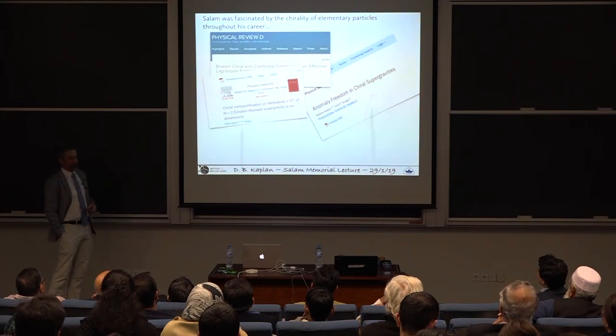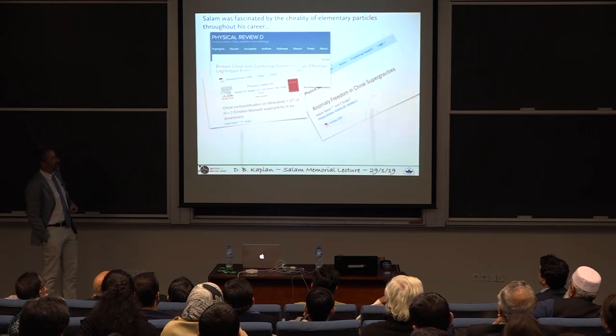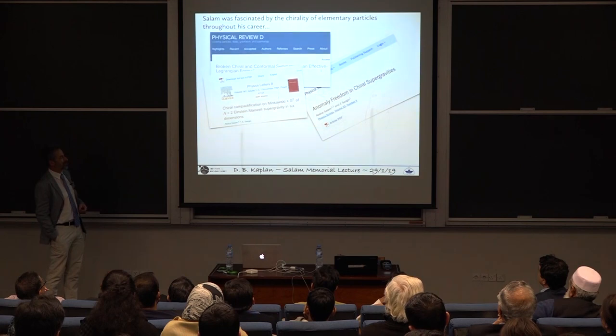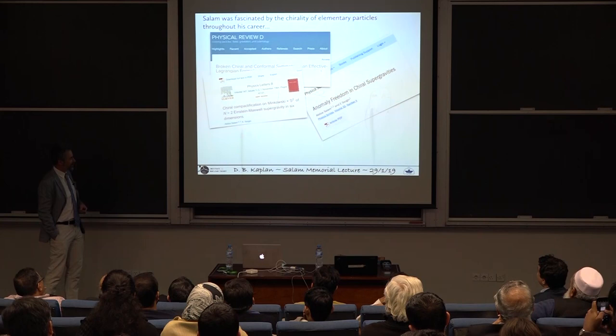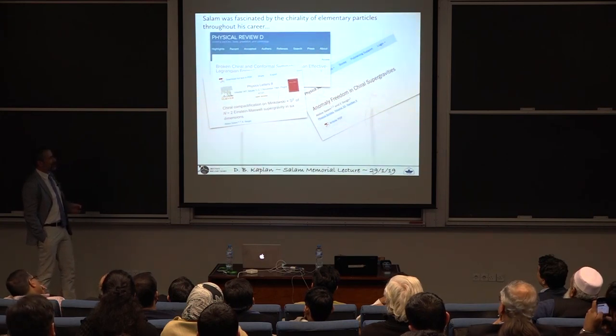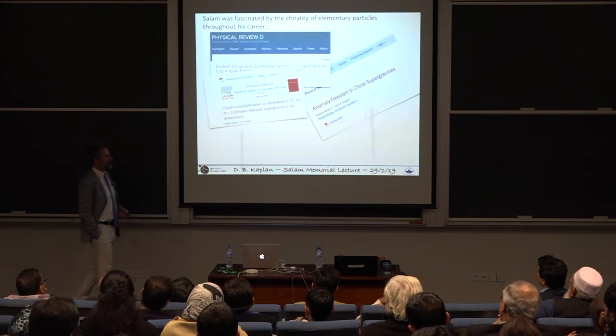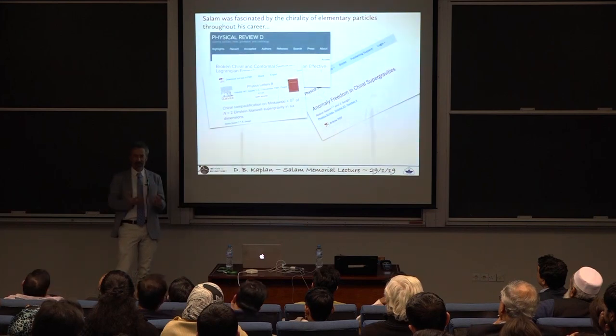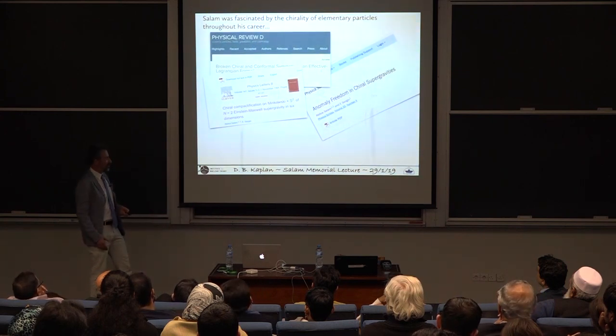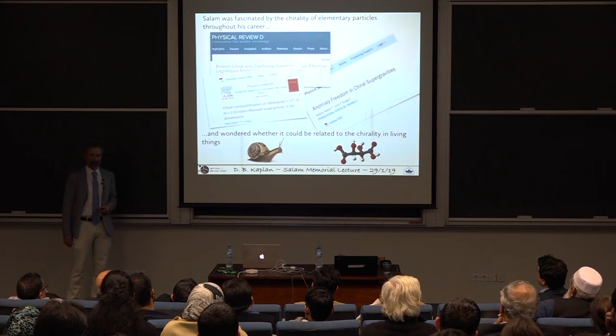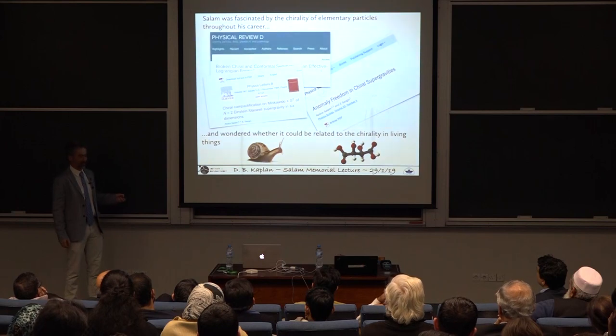Now, Salam wrote lots of papers on chirality. I just pulled off a few from this list. They're very technical. Chiral compactification on Minkowski cross the two-sphere of N equals two Einstein Maxwell supergravity in six dimensions. This is a hard paper to read, but he loved chirality. He talked about it in many, many different ways. And the thing that's sort of interesting, I discovered, was that, toward the end of his life, he became very interested in whether the chirality that we've been talking about at the particle level is related to the chirality I mentioned at the beginning, that we see in nature.